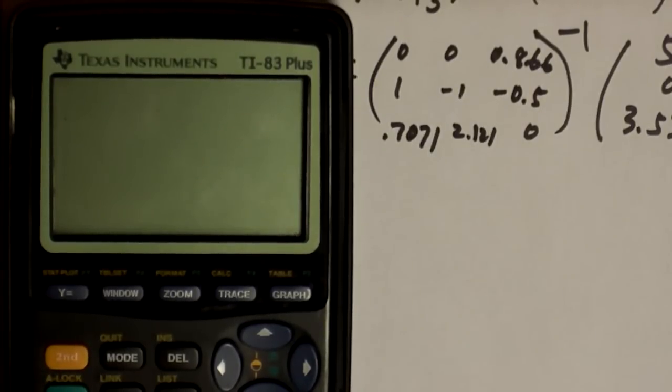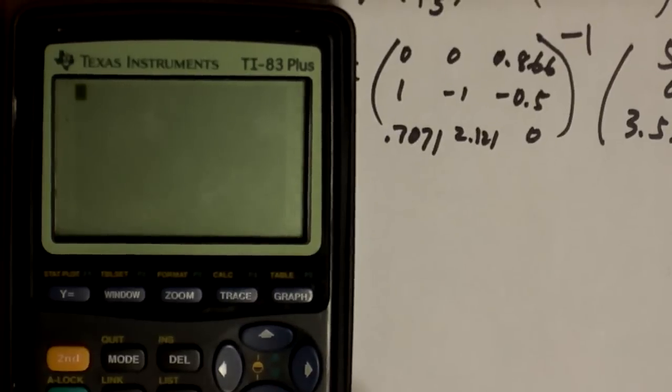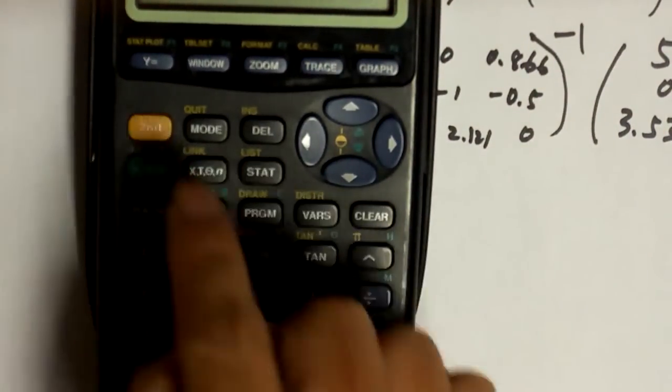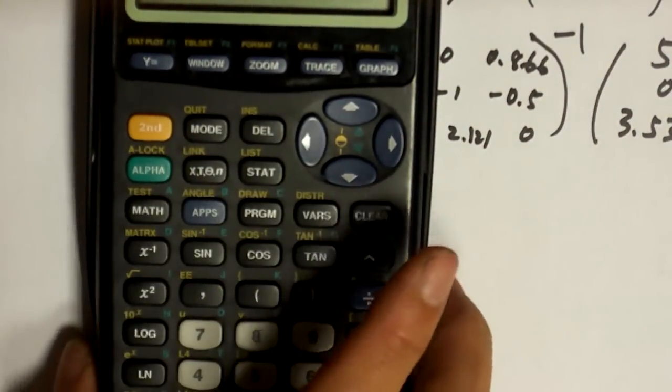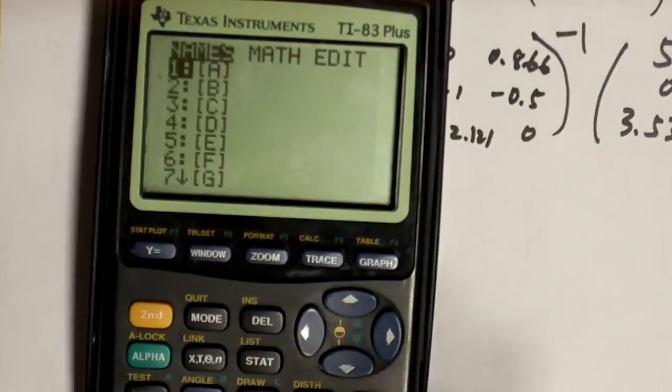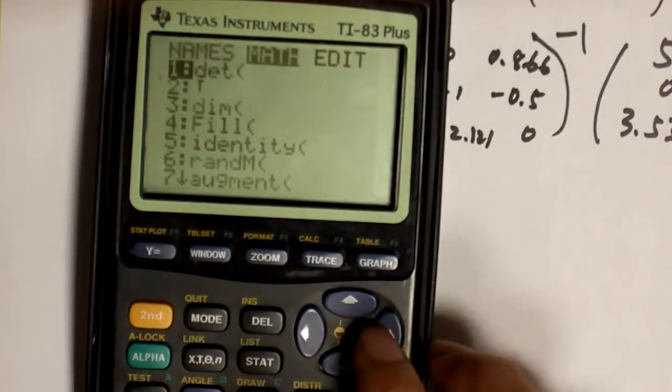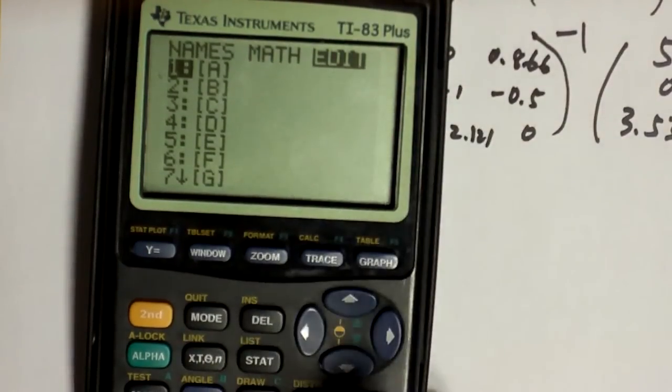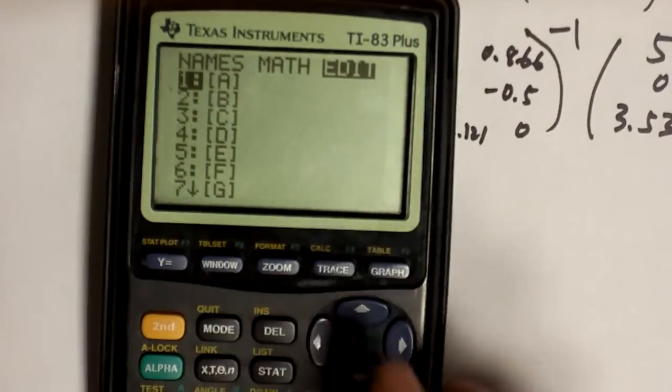And once you're done, you can use a calculator to calculate this to find the solution. Now, this model here I'm showing you is TI-83, so depending on your calculator, the way you solve it will be maybe slightly different. How do you solve it with TI-83? First, you're going to press 2nd matrix. That gives you this screen where you have names of matrices. And then, as you move on, there's this edit screen. You're going to go to the edit screen and pick the very first matrix and press enter.